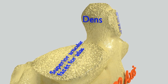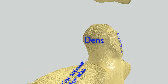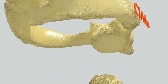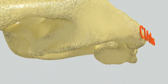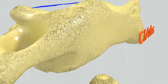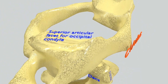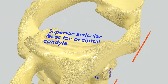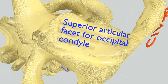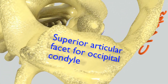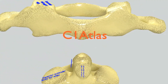You can see the superior articular facet of the axis for the corresponding inferior articular facet of the atlas. Similarly, the atlas also has a superior articular facet for the occipital condyle present at the base of the skull, which helps in neck rotation. Note that the atlas does not have a vertebral body.